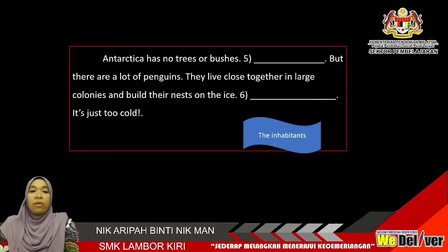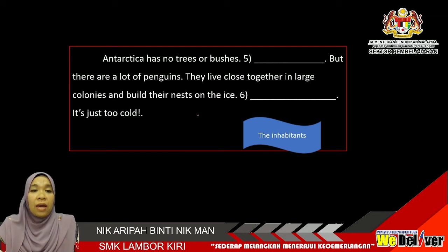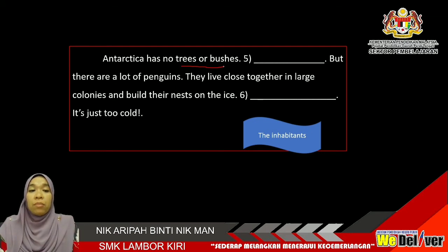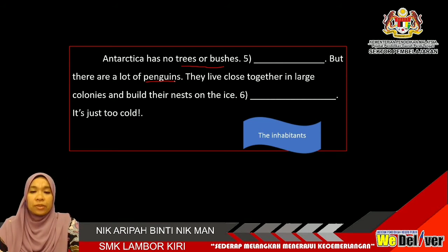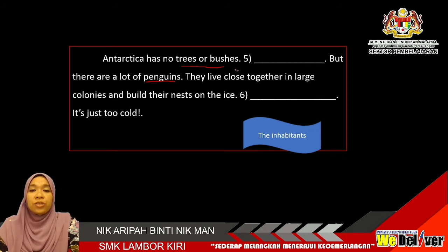Let's look at the third paragraph. Antarctica has no trees or bushes, but there are lots of penguins. They live close together in large colonies and build their nests on the ice. Blank. It's just too cold. So this paragraph actually tells you about the inhabitants of Antarctica.